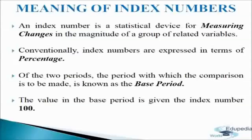Of the two periods, the period with which the comparison is to be made is known as the base period. For example, if an index number is prepared to know how much the price has changed in 2005 from the level in 1998, then 1998 becomes the base year. The value in the base period is given the index number 100. If the index of price is 200 in 2009 compared to 100 in the base year 2005, it suggests that prices have risen by 100% compared to the base year. Thus, the study of index numbers helps us to know the percentage change in the values of different variables over a period of time with reference to the base year.